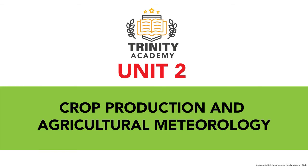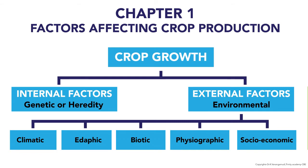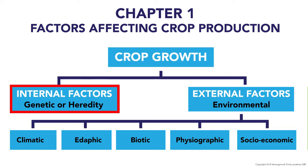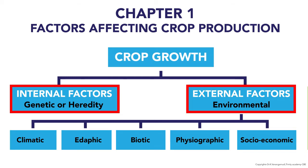Welcome friends. I completed unit 1 yesterday. The new unit is Unit 2: Crop Production and Agricultural Meteorology. The first chapter is factors affecting crop production. Crop growth is influenced by internal factors, that is genetic factors, and external factors, that is environmental factors.